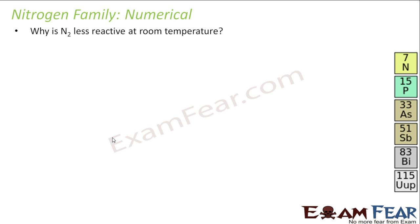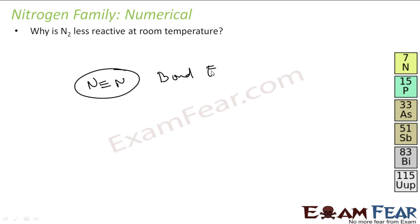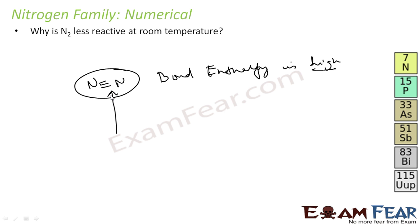Why is Nitrogen less reactive at room temperature? We have seen that Nitrogen has a triple bond and the bond enthalpy is very high. That means very high temperature is required to break this triple bond. So at room temperature, Nitrogen is less reactive. But at high temperature, when this bond breaks, Nitrogen becomes reactive with metals, non-metals, Hydrogen, and Oxygen.